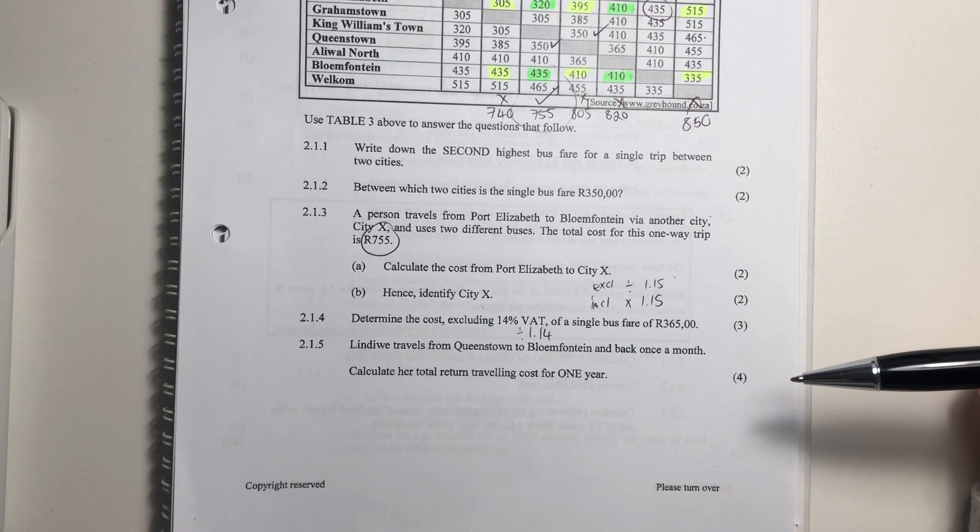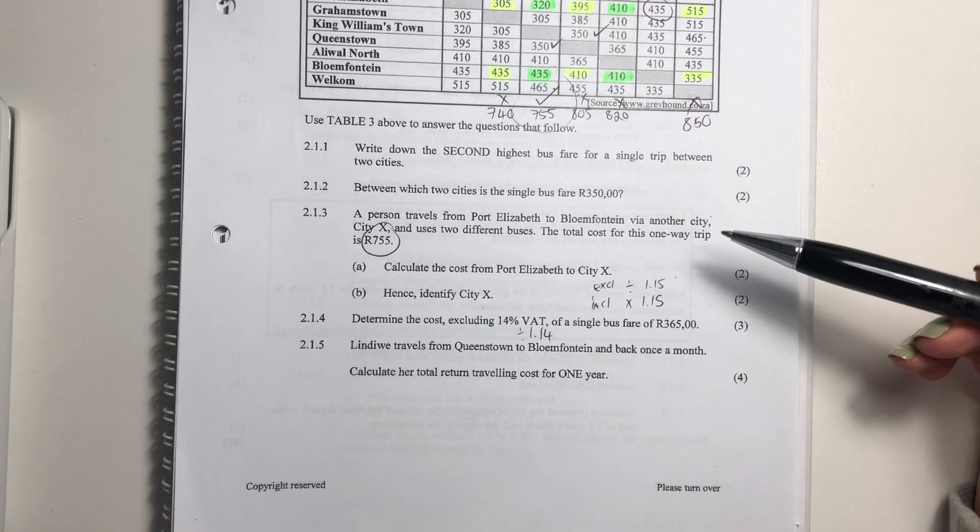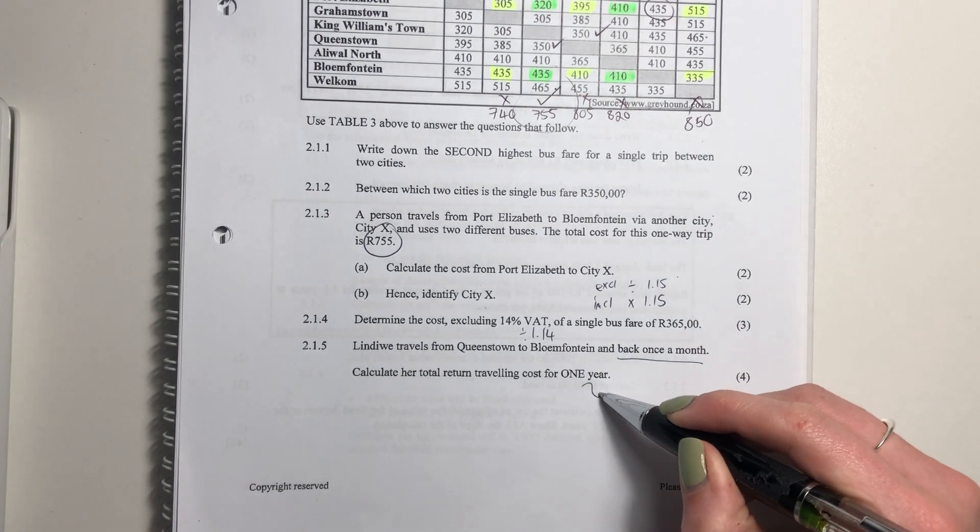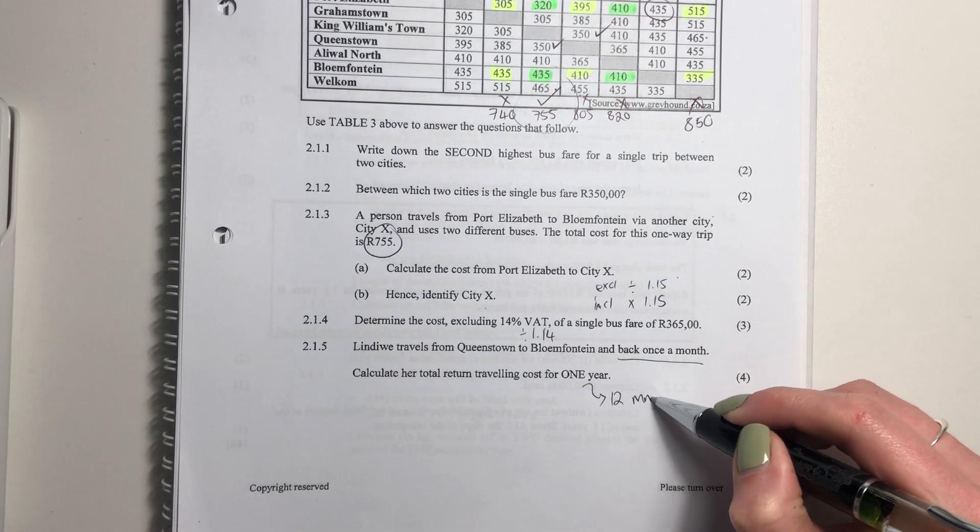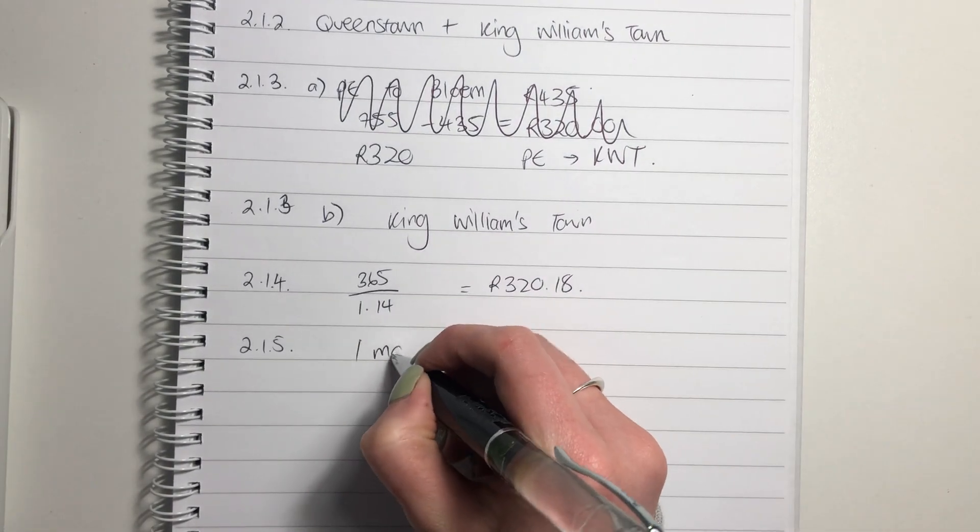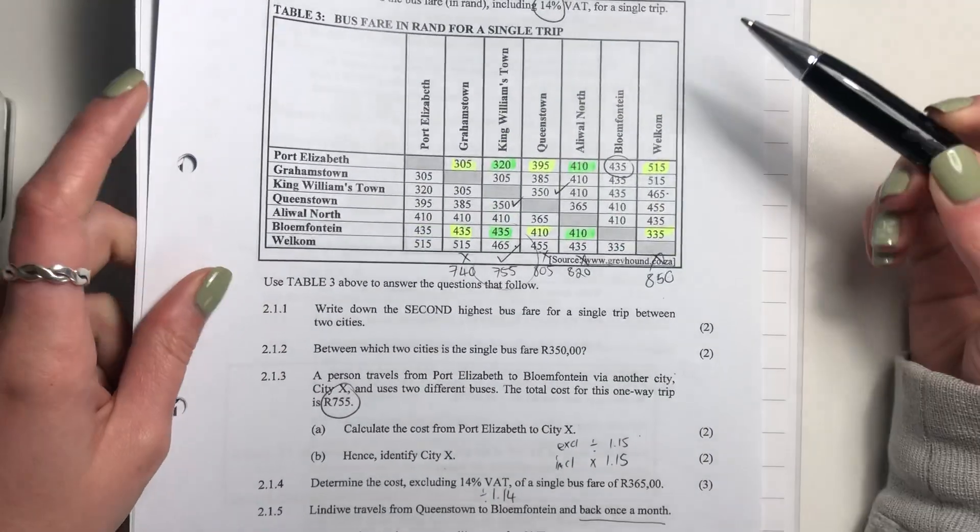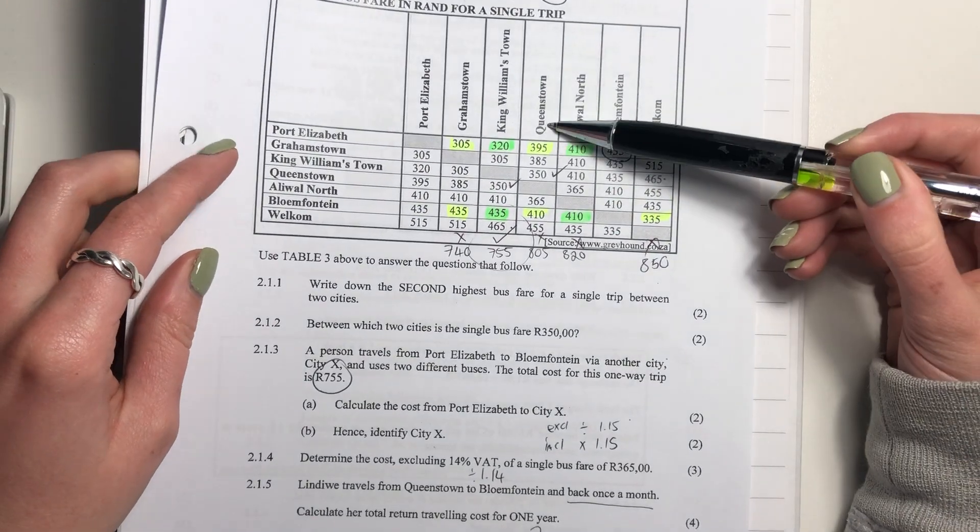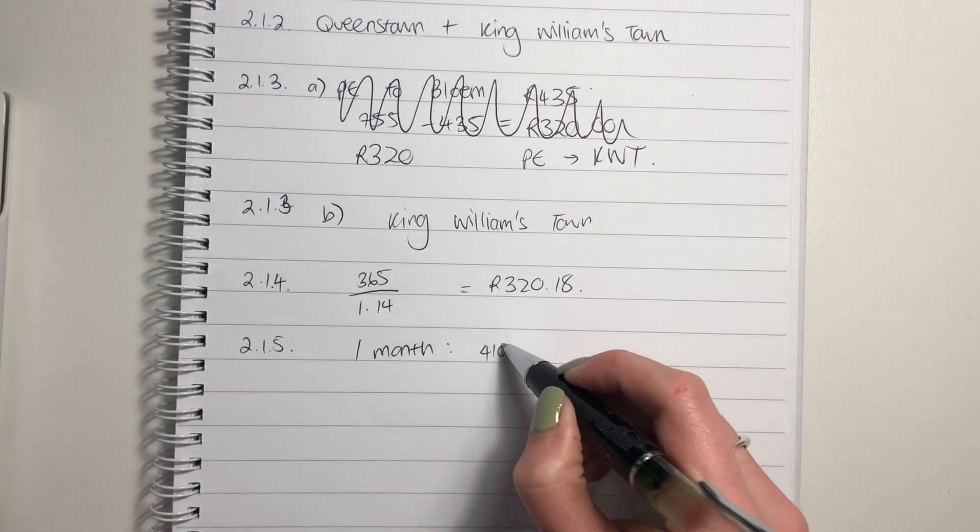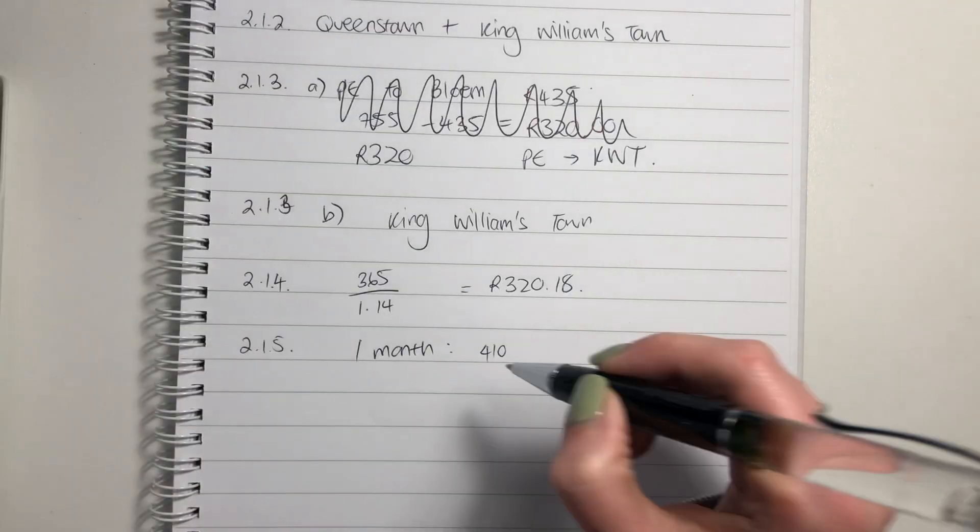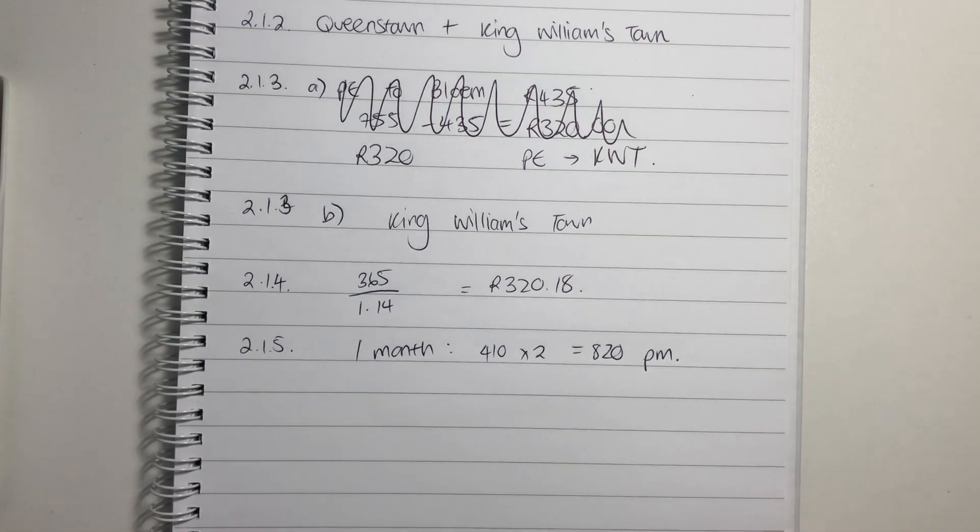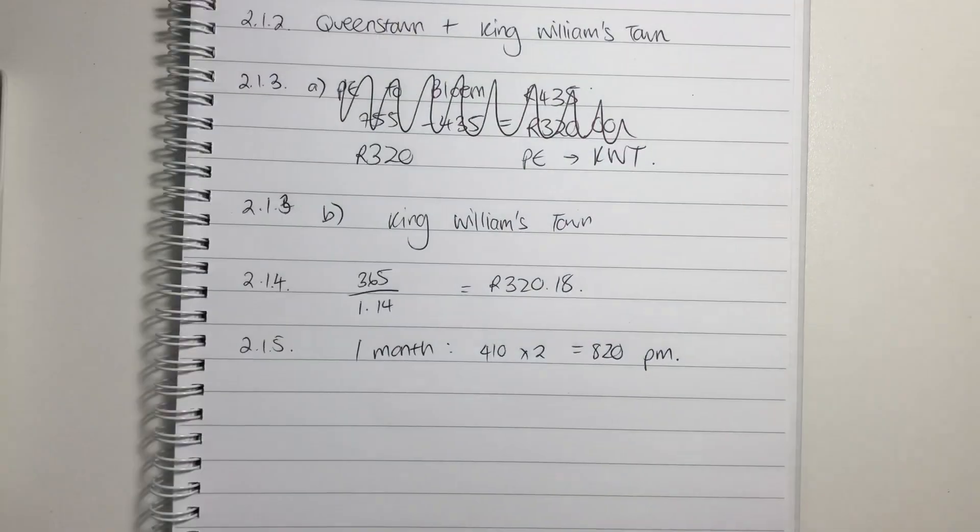Let's now look at the last question. Lindiwe travels from Queenstown to Bloemfontein and back once a month. Calculate her total return traveling cost for one year. How many months in a year? 12 months. So let's do one month first. So one month is going to be, where does it say? Queenstown to Bloemfontein. Right? So it's 410. So you say 410. But it's return, hey? Because remember, I said, and back. So that's times by 2. So that's 820 per month.